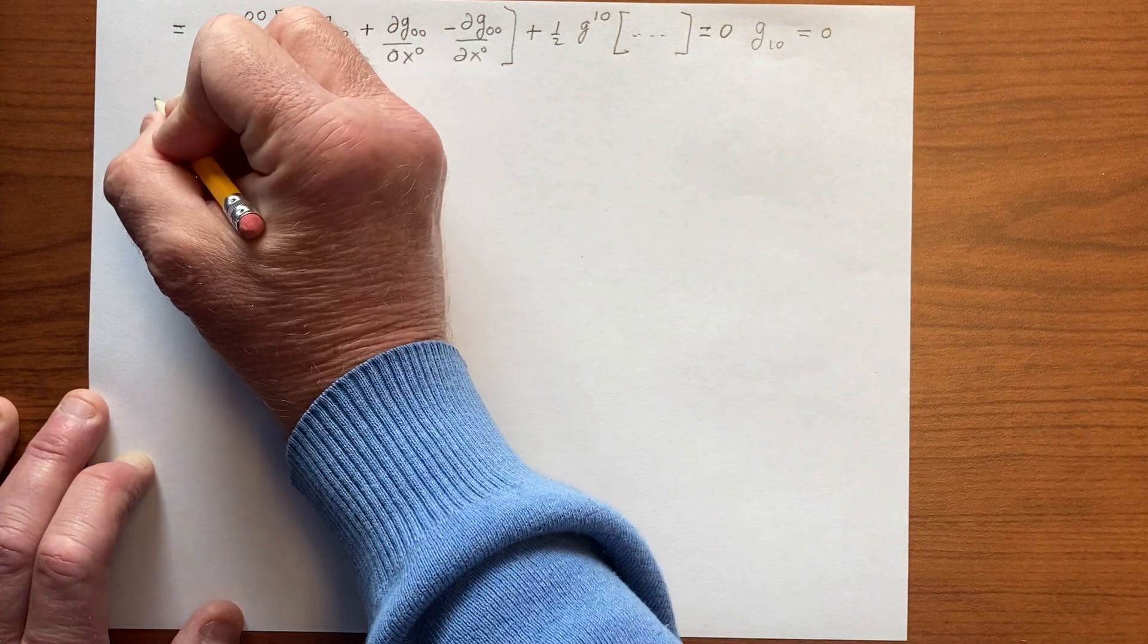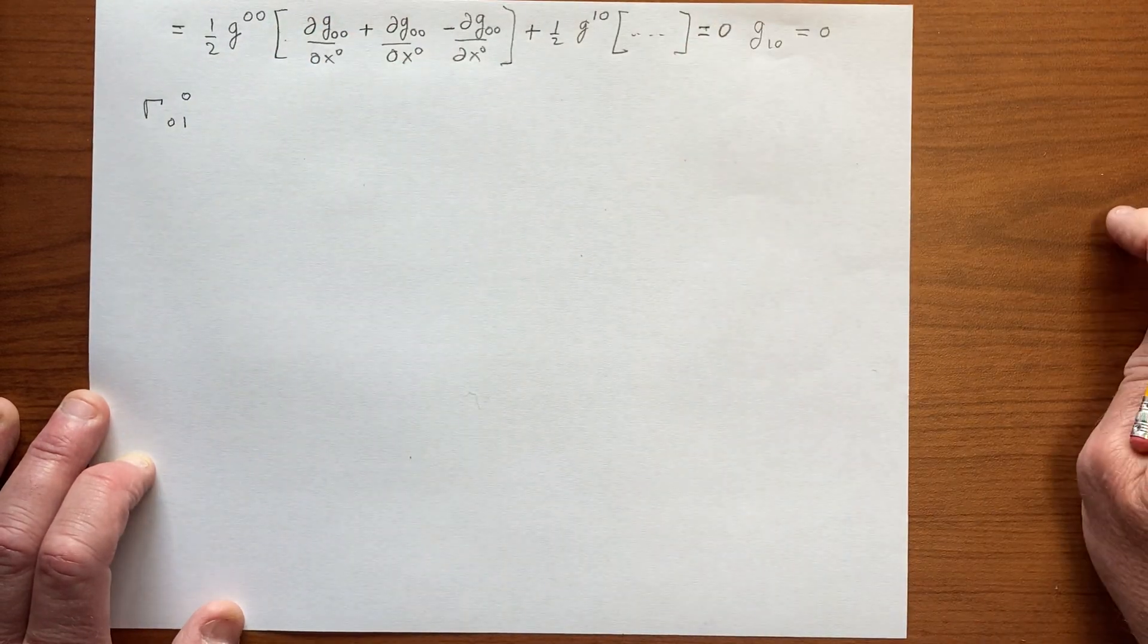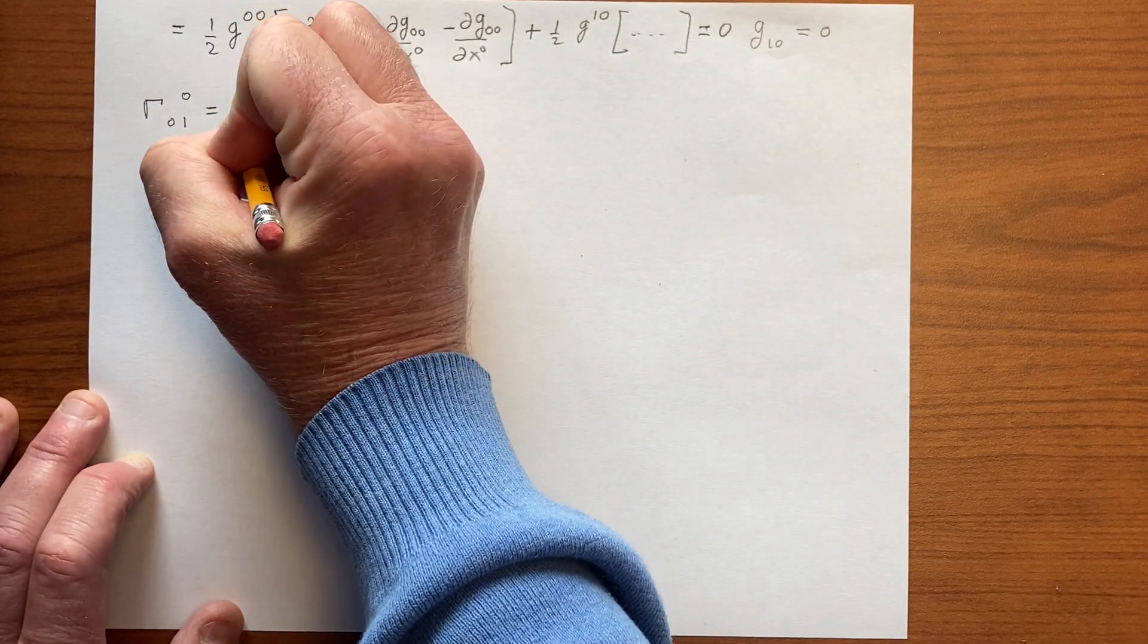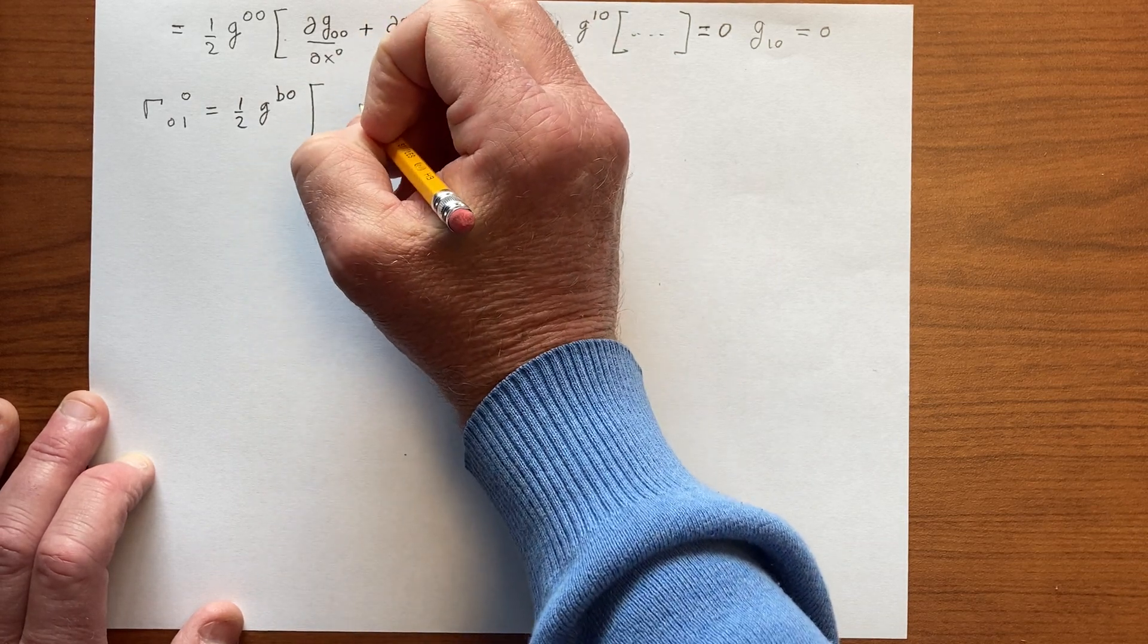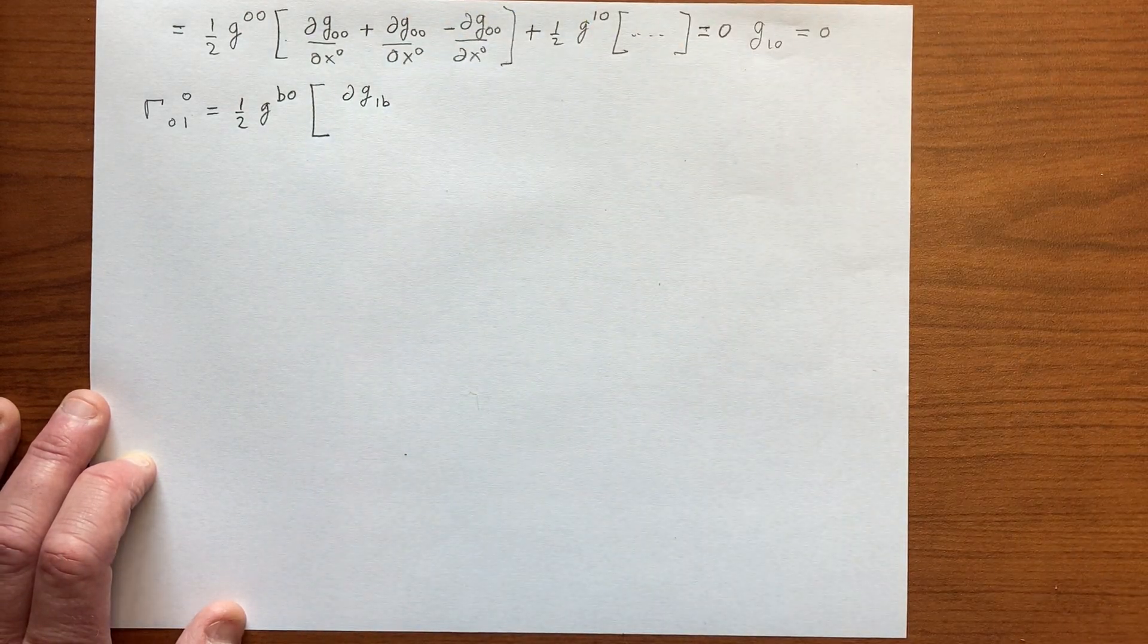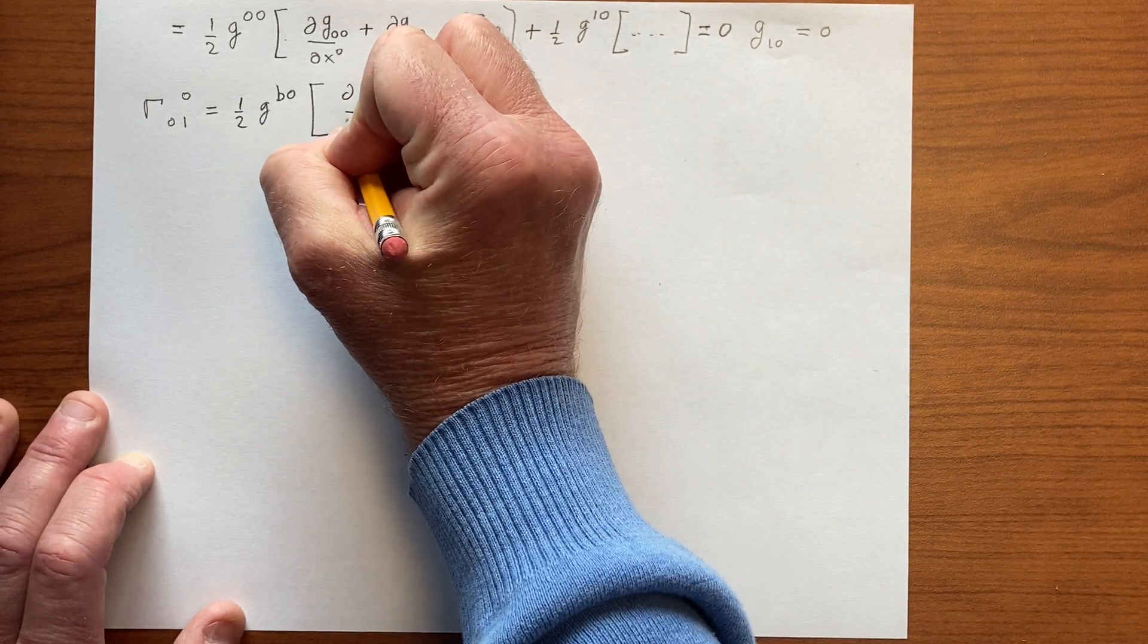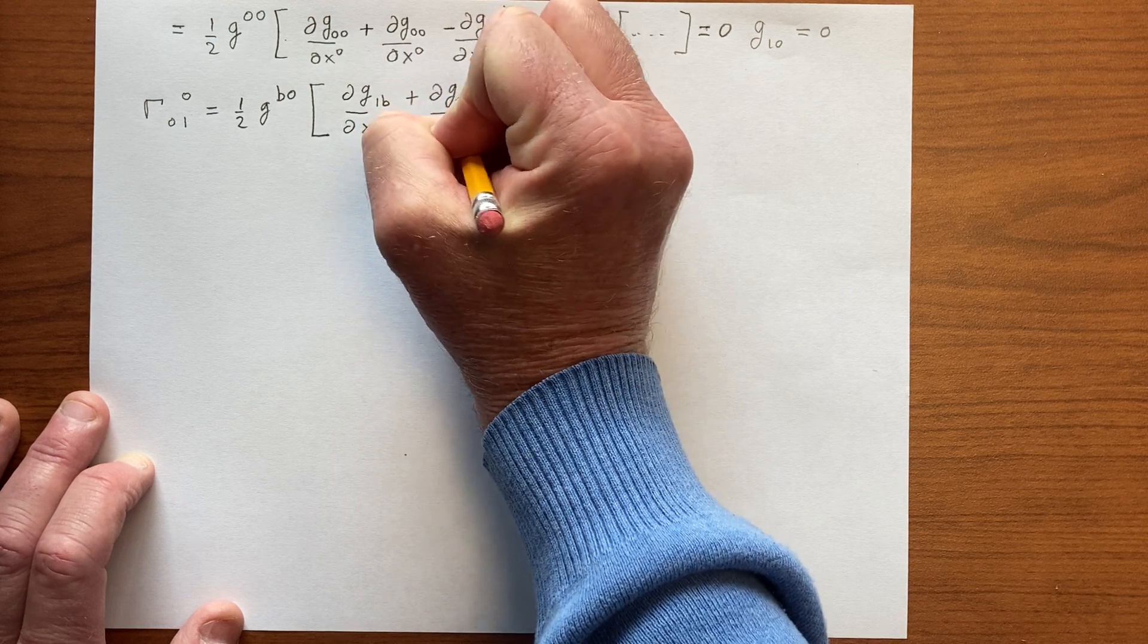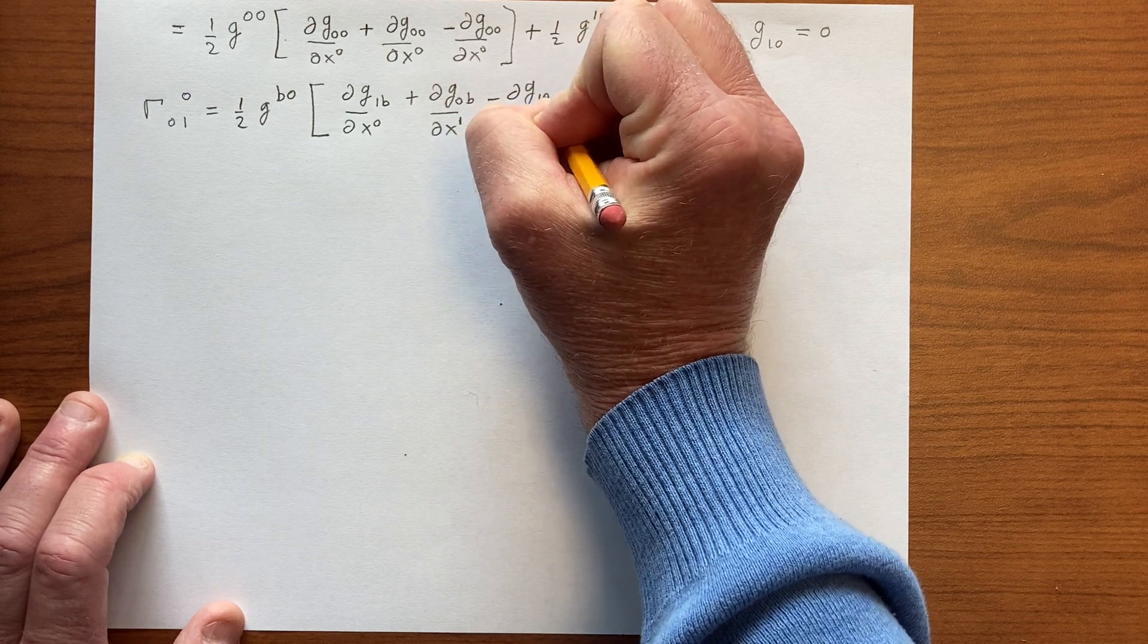So let's move on to Γ^0_01. Here we have ½g^b0 ∂g_1b/∂x^0 plus ∂g_0b/∂x^1 minus ∂g_10.